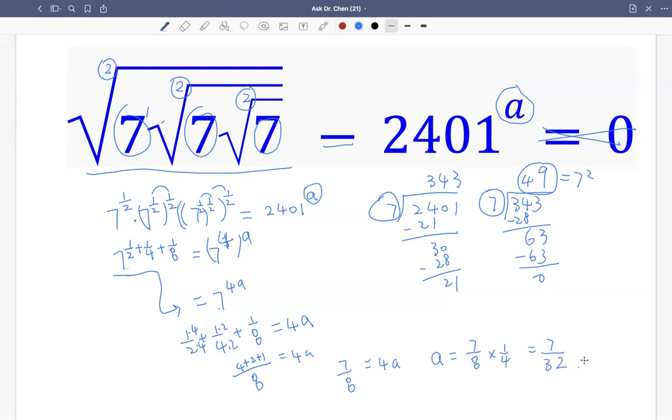Okay, the equation is solved. a equals 7 over 32.